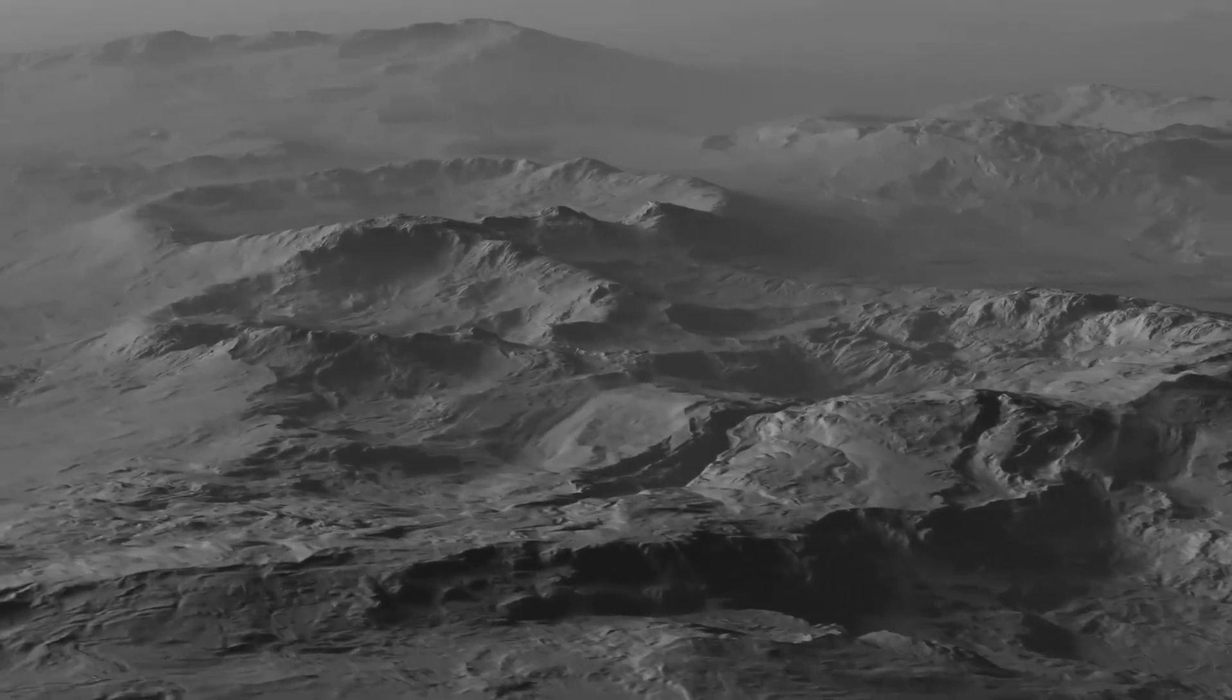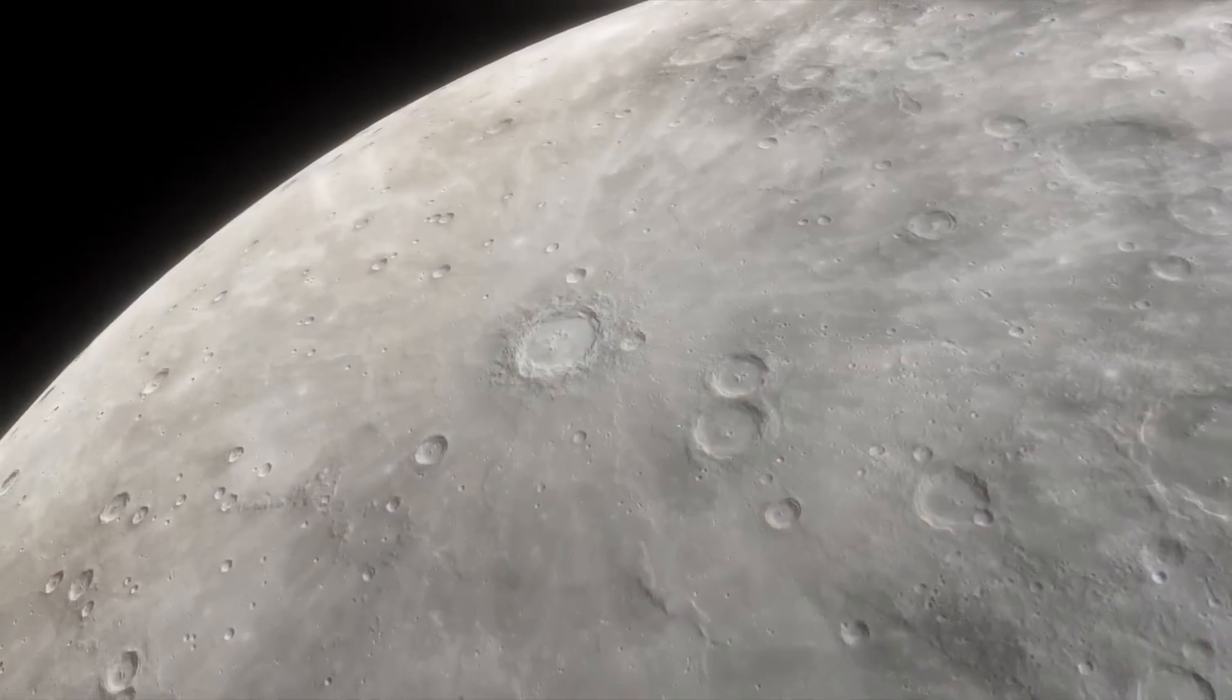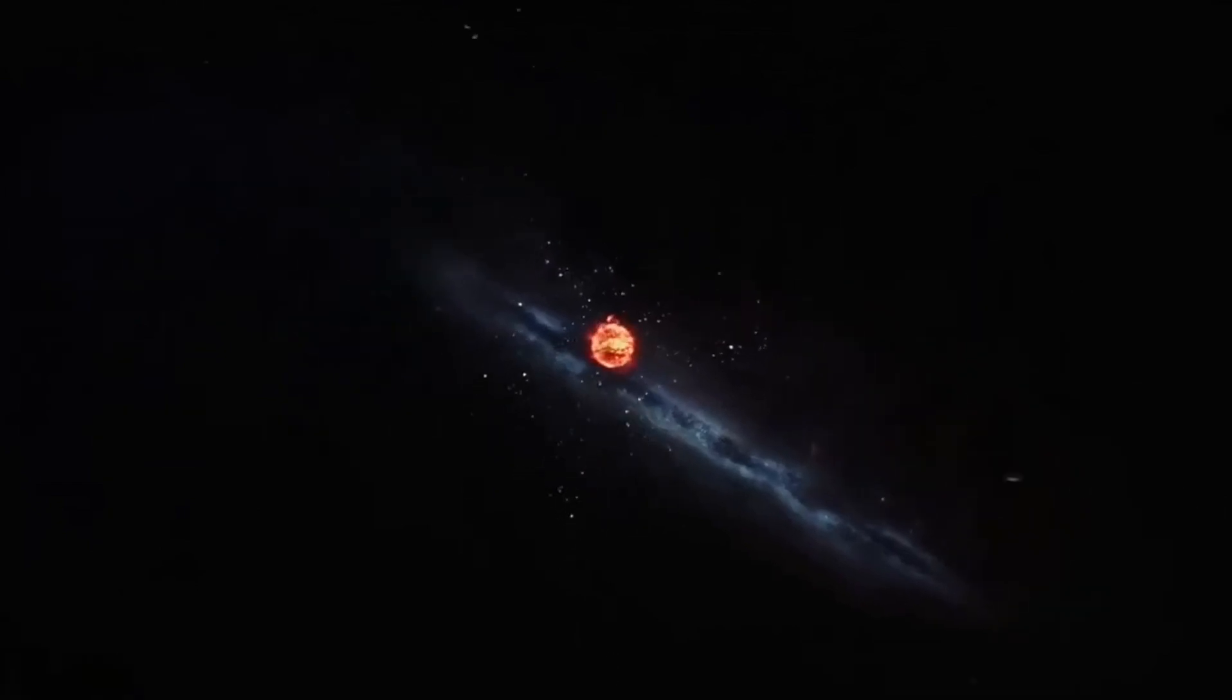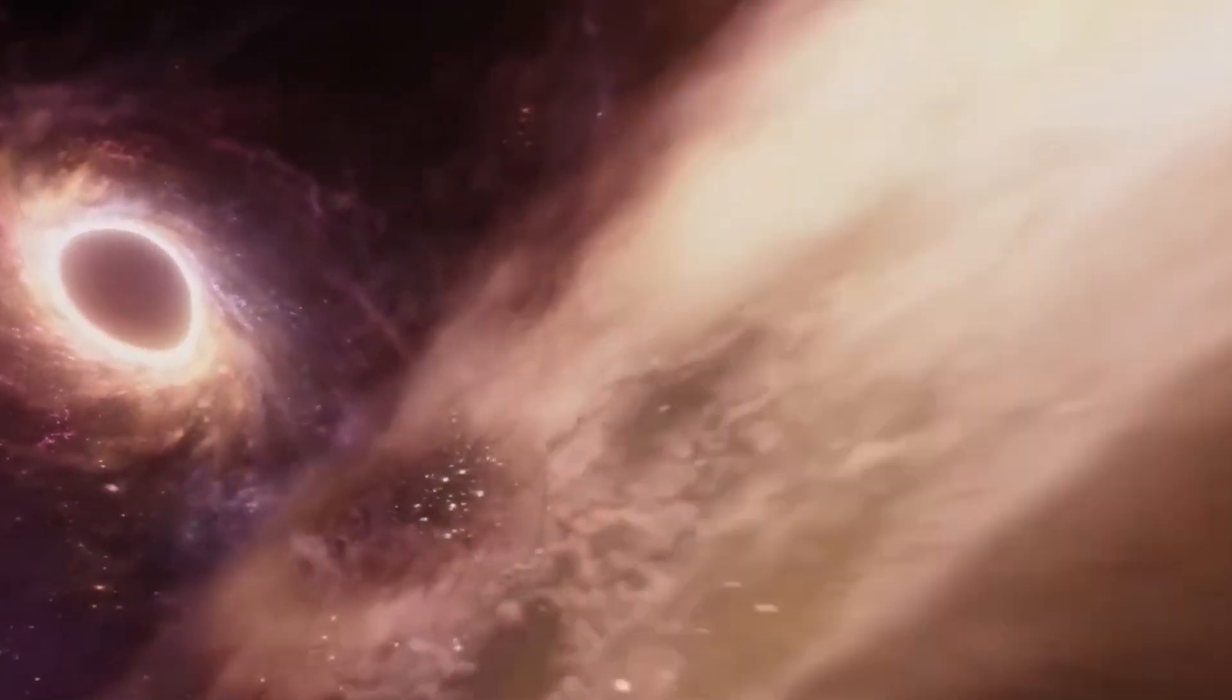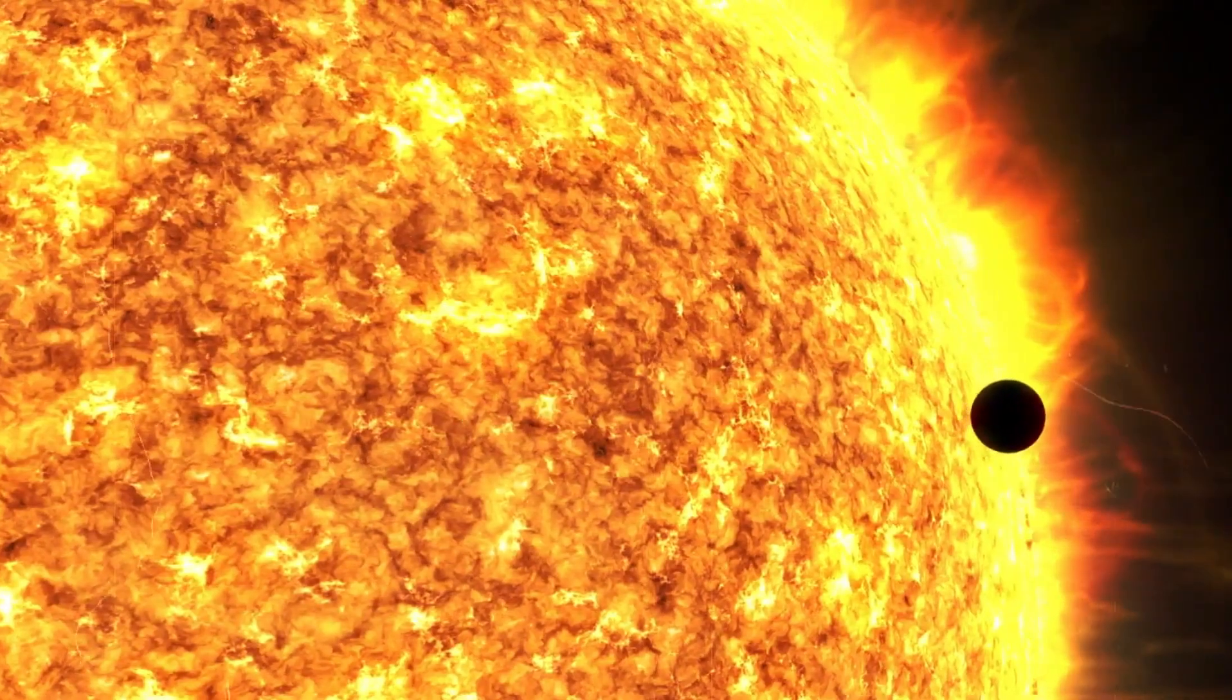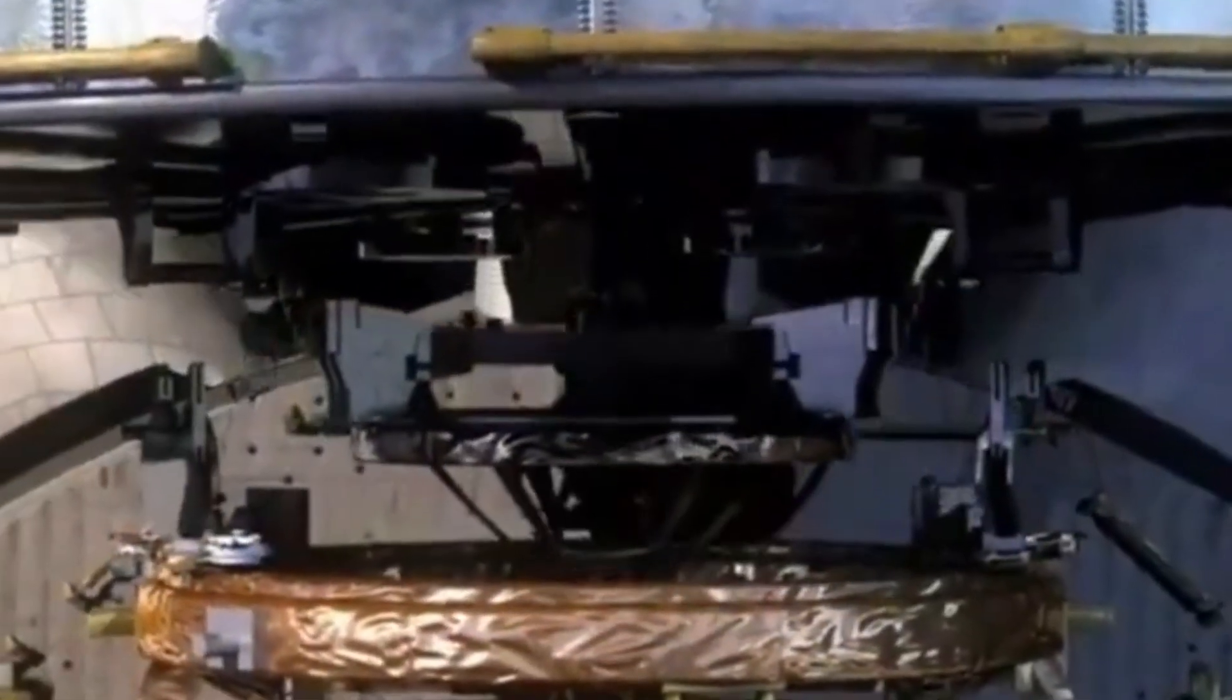Bathed in the dazzlingly bright light of the Sun, it was practically impossible to observe this planetary oddity directly from Earth for generations. Furthermore, the extreme solar radiation prevented almost all research visits. It was only when Messenger entered Mercury's orbit in 2011 that the planet could be studied in detail over a longer period of time for the first time.